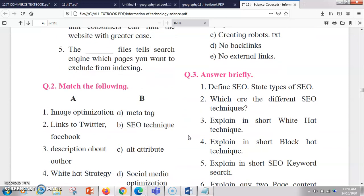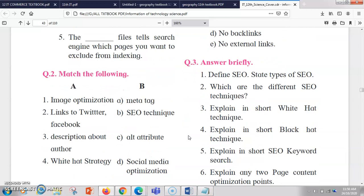Now next is define SEO, state the types of SEO. So you just have to define what is Search Engine Optimization and you have to write about its types like on-page SEO, off-page SEO, technical SEO. Which are the different SEO techniques? In this you can give answers like what is white hat SEO, what is black hat SEO, which is good, which you should follow.